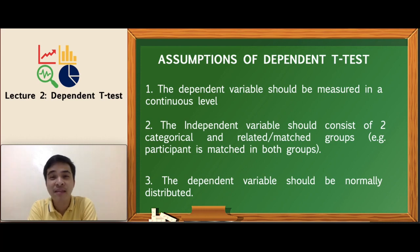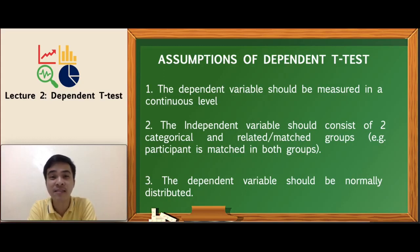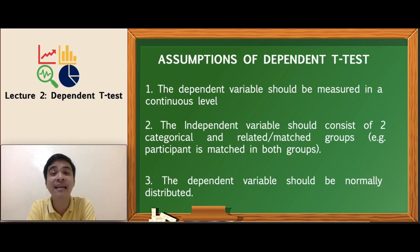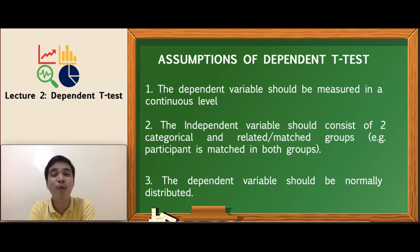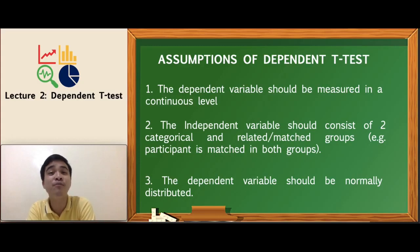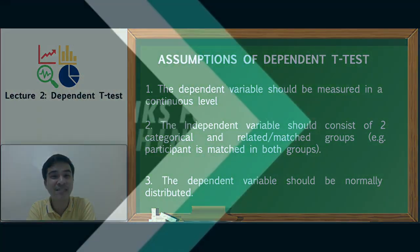Remember that dependent sample t-test is a parametric test used to compare two related groups, while independent t-test is also a parametric test but used to compare significant differences for two unrelated or independent groups. Today, we learned when to use dependent samples t-test and what sample questions are answerable by using these inferential statistics.